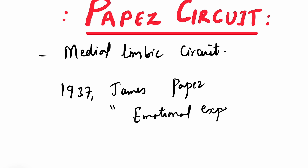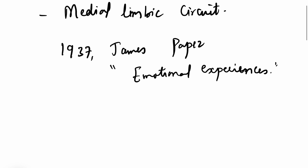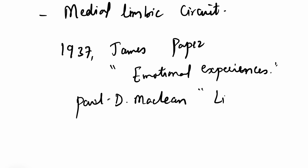So whatever emotional experiences are there, it is due to the presence of this circuit. Later on it was found that there is something known as amygdala. Another neuroscientist by name Paul D. MacLean reconceptualized Papez's proposal and coined the term limbic system, in which he added amygdala, septum, and other structures.